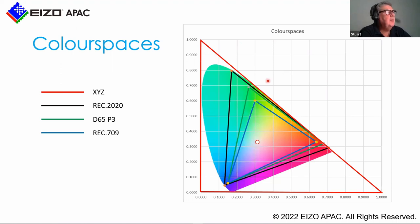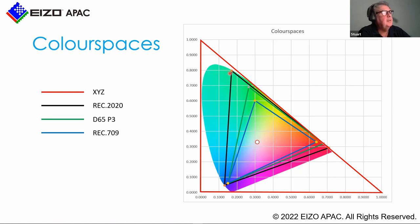Looking at color spaces: XYZ is the mother of all color spaces, developed from the CIE 1931. Within that, the practical color spaces we use are Rec.2020 — the color space for BT.2100 — then DCI-P3 and Rec.709. DCI-P3 sits entirely within the Rec.2020 gamut. When we look at Disney's color space and formats later, you'll see how that works. The entire P3 color space sits within Rec.2020.